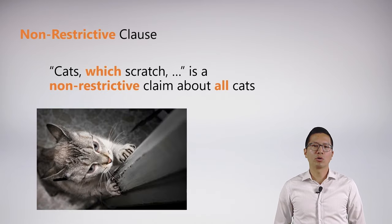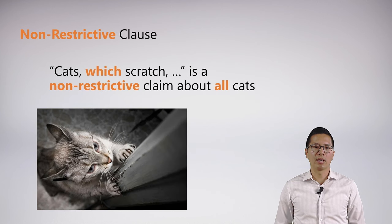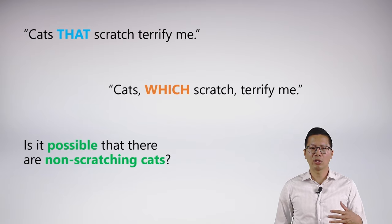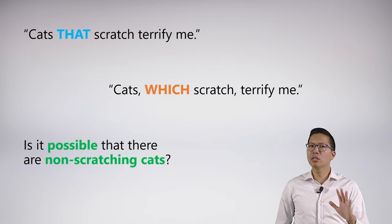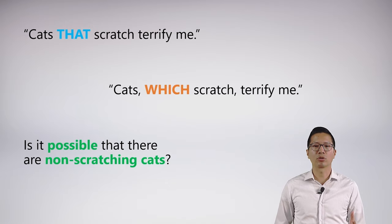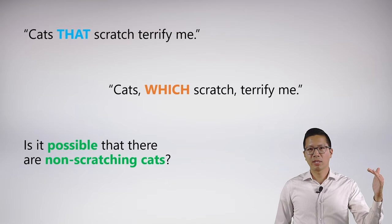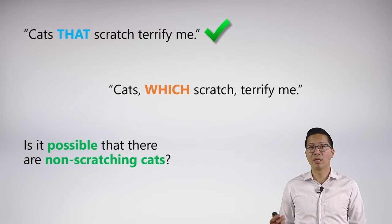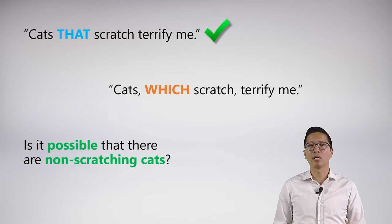Whereas a non-restrictive clause — which was the case in the 'which' example — this is actually a non-restricted claim; it's a claim about all cats. There's an easy way to differentiate the meaning between these two. I could ask: is it possible that there are non-scratching cats? In the top sentence, the answer is yes — I'm just not talking about those cats. I don't know anything about those cats according to the statement; they might terrify me or they might not. What I'm talking about are only those cats that also scratch.